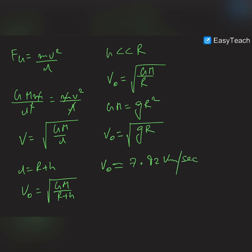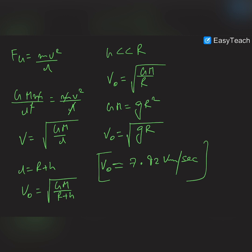This is the orbital velocity of a satellite revolving around the Earth in a very close orbit, and it is also called the first cosmic velocity.